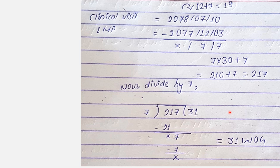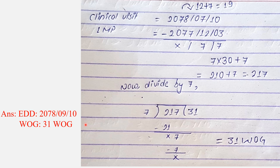We also calculate the EDT by adding 9 months and 7 days to the LMP. So we have 31 weeks of gestation. We have covered expected date of delivery and week of gestation calculation today. Hopefully this will help you. Stay tuned, thank you for this session.